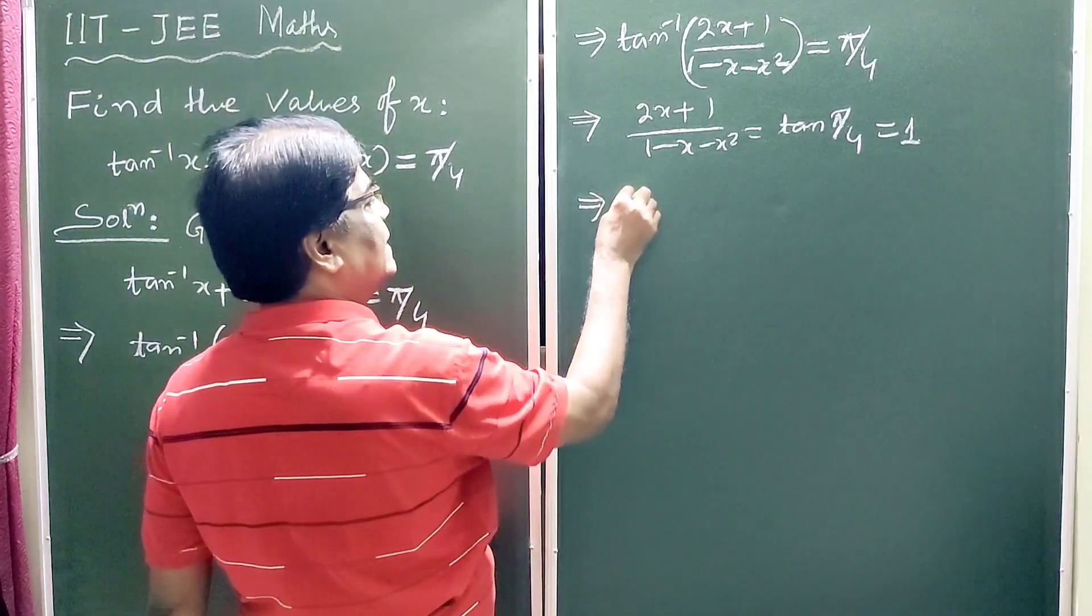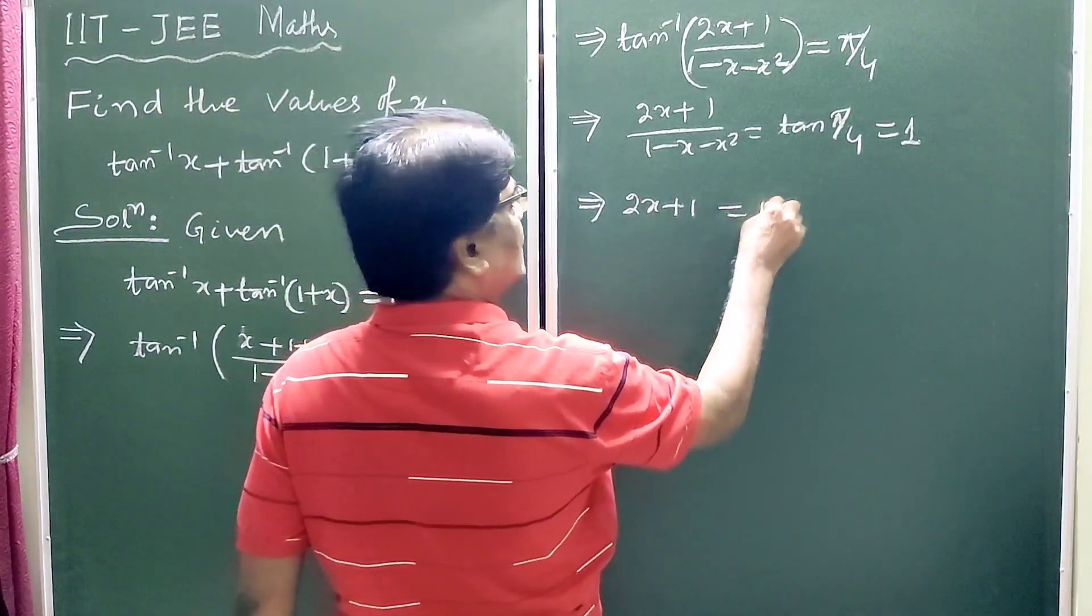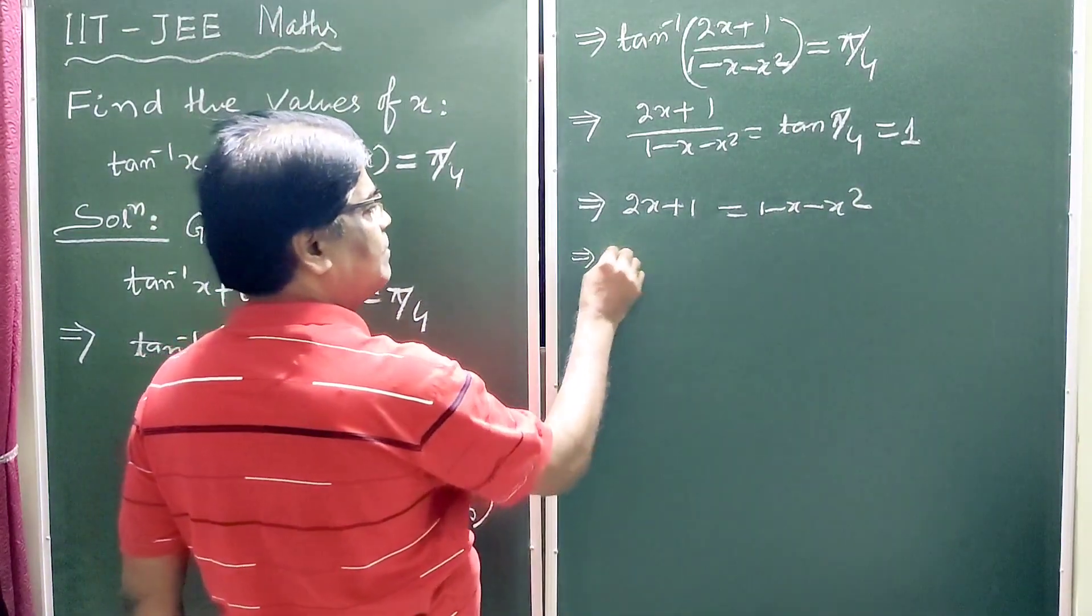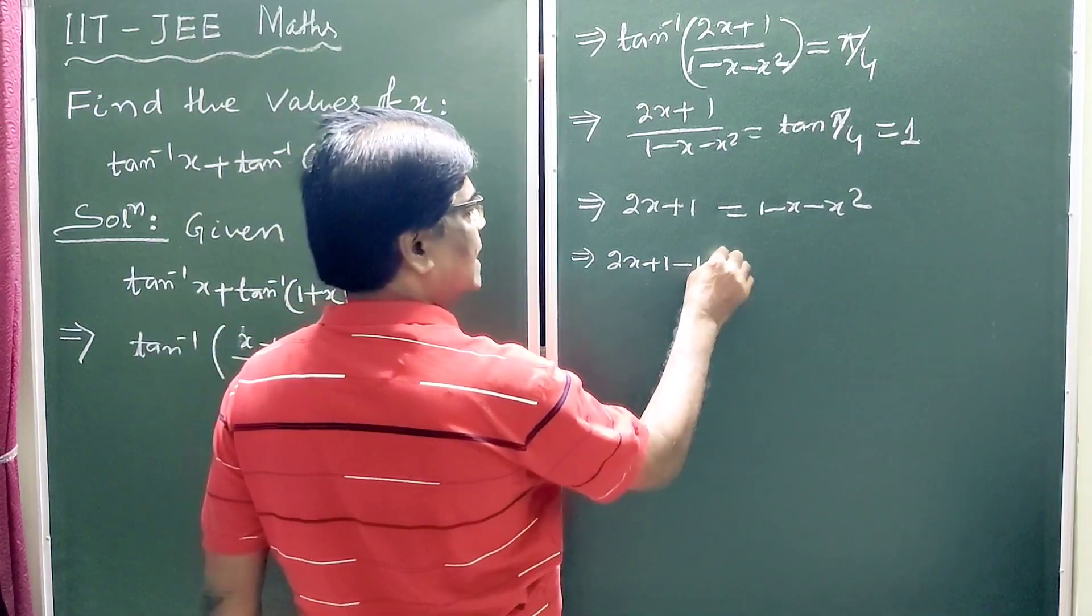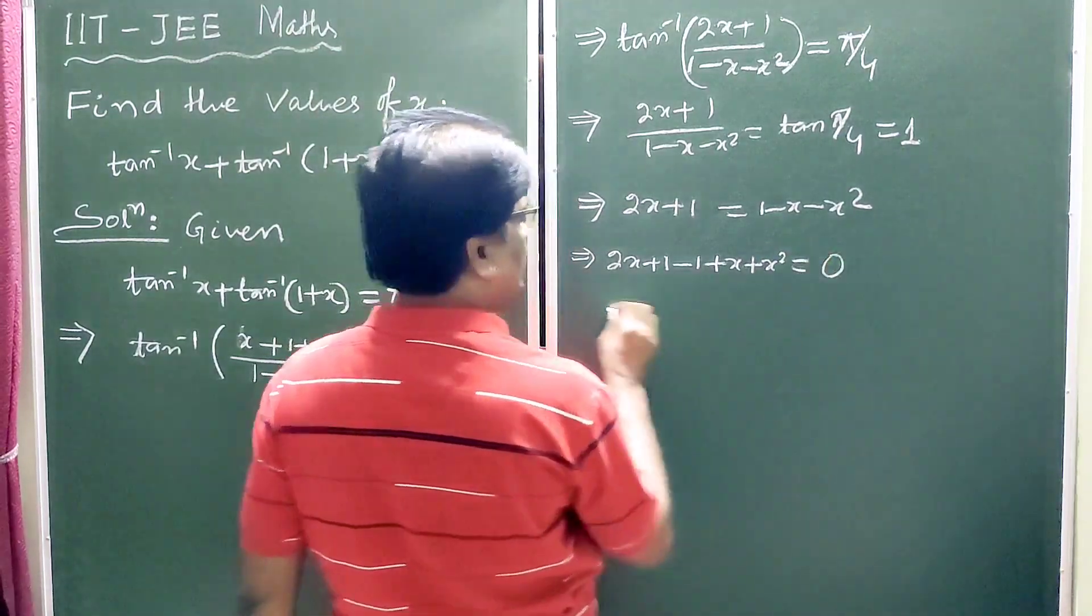So this implies 2x plus 1 is equal to 1 minus x minus x square. This again implies 2x plus 1 minus 1 plus x plus x square is equal to 0.